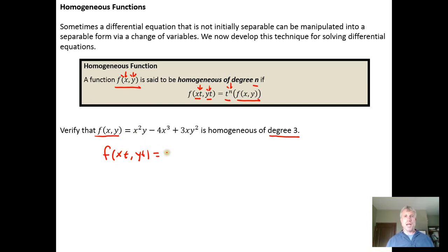So everywhere we see an x we get xt squared. Everywhere we see a y we replace that y with y times t. So minus 4x cubed, replace the x with xt, plus 3x replace the x with xt times y squared and replace the y with yt.